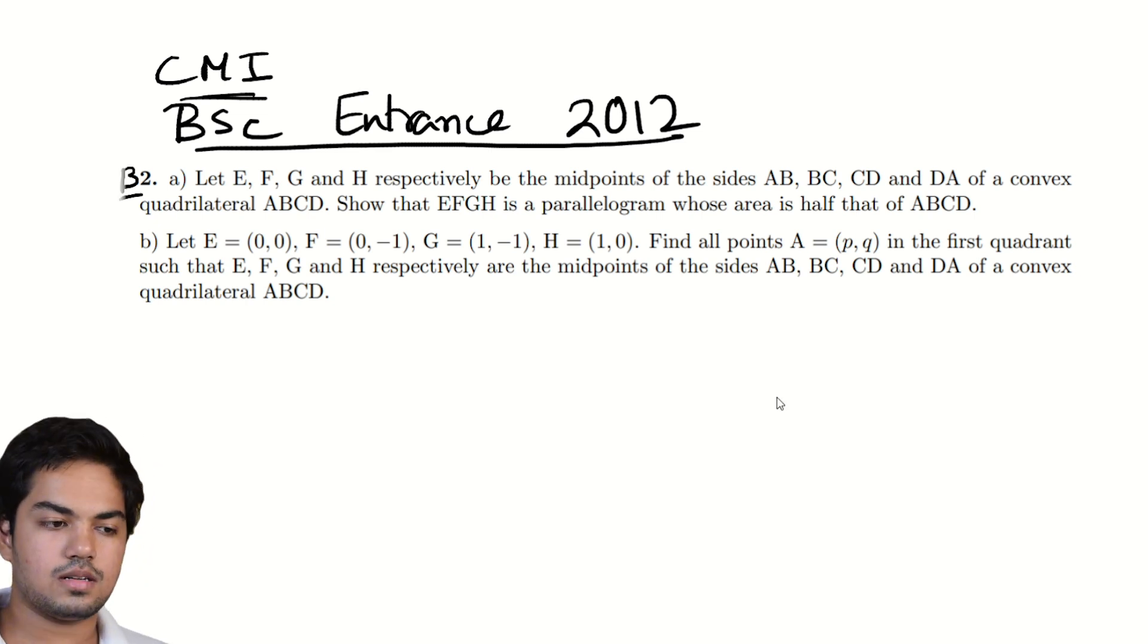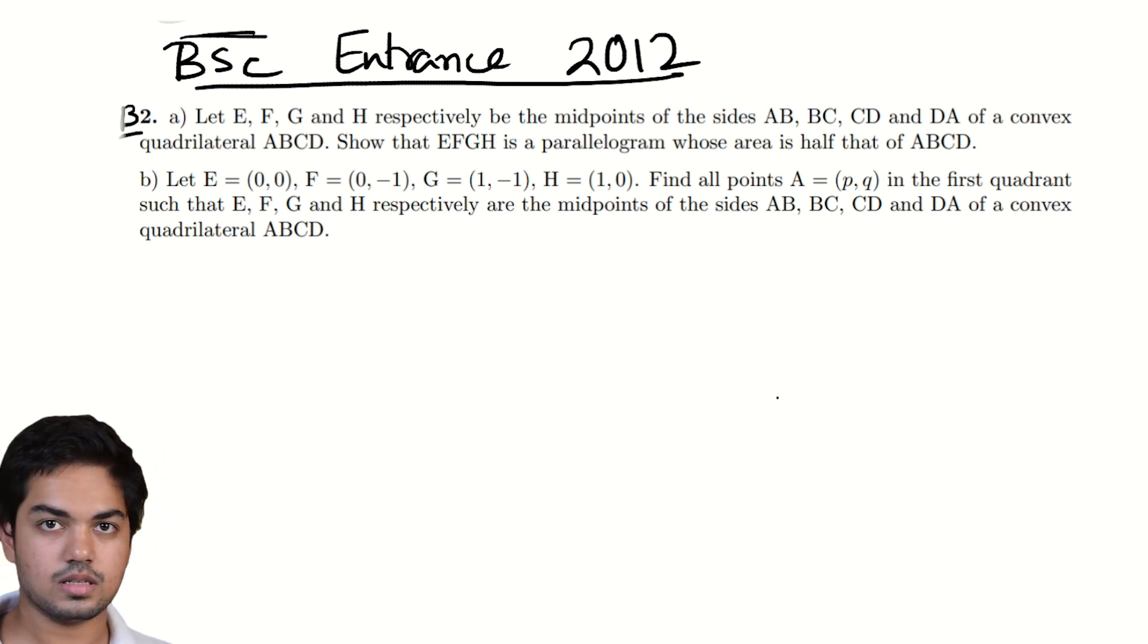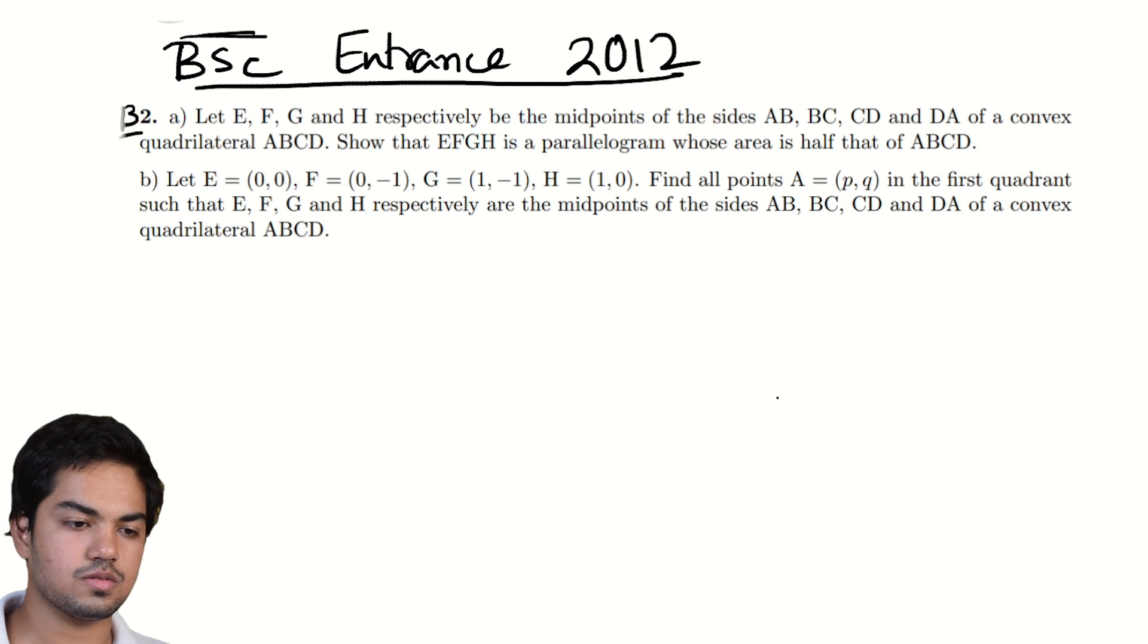Part A is a classic problem that many students may have encountered in their school geometry curriculum. It says that if ABCD is a convex quadrilateral then the midpoint quadrilateral is a parallelogram with half the area of ABCD. We'll quickly go through a proof of this but our main focus will be part B.